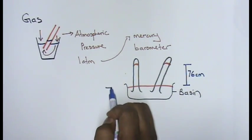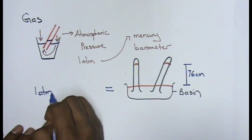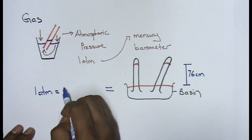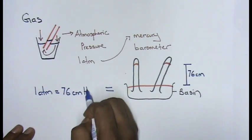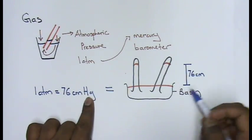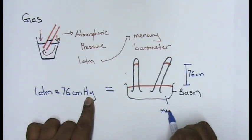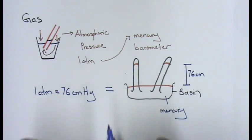From this, what conclusion came was: 1 atm equals to 76 centimeters mercury. Hg, my dear students, is the symbol for mercury. This is the first step.